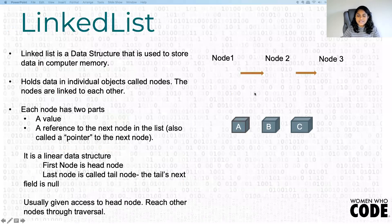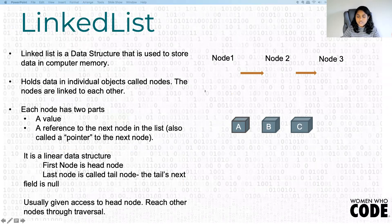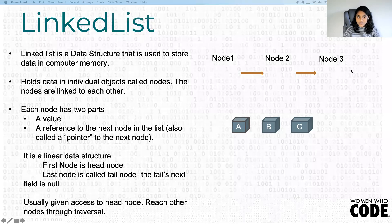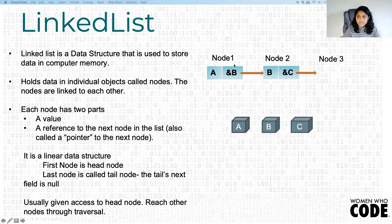So what are linked lists? A linked list is a data structure that is used to store data in computer's memory. Think of that like a box in computer memory, and each box holds a value. Linked lists are composed of nodes — a linked list is made up of nodes, and all these nodes are linked to each other.